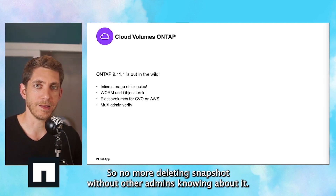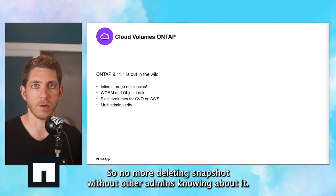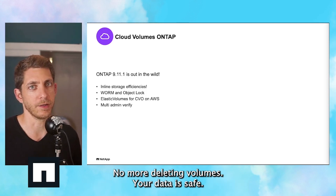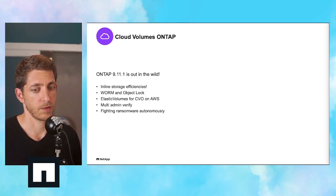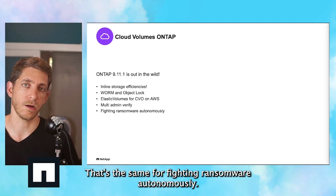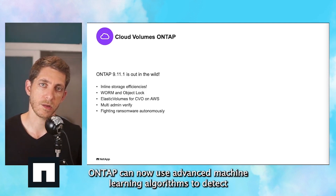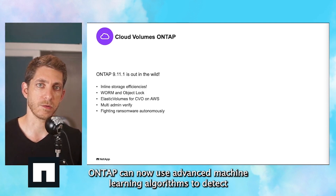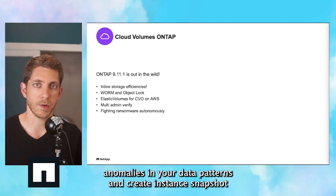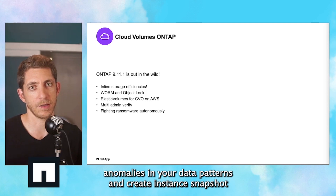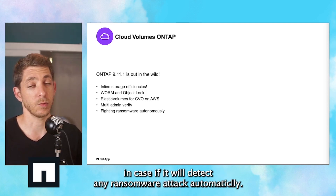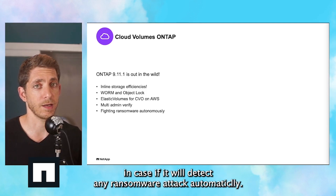No more deleting snapshots without other people knowing about it, no more deleting volumes — your data is safe. Multi-Admin Verify allows ONTAP to block any actions until two admins will approve it, and that will make your data much, much safer. ONTAP can now also use an advanced machine learning algorithm to detect anomalies in your data patterns and create instant snapshots in case it detects any ransomware attack.